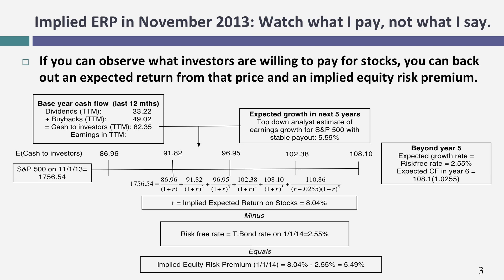On November 1st of 2013, if you bought U.S. stocks, you could expect to make an 8.04% return over the long term on an annualized basis. Subtracting out the risk-free rate of 2.55%, I come up with an implied equity risk premium of 5.49%. It's a forward-looking, dynamic number — it will change on a day-to-day basis, and that is my other choice for equity risk premiums.